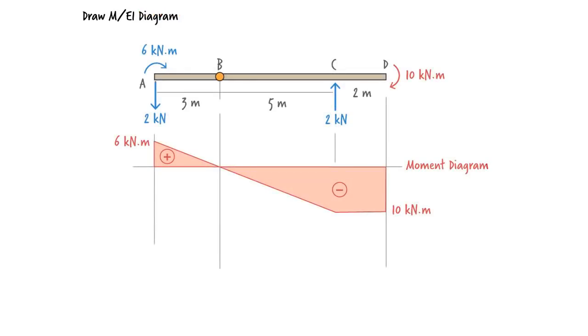We convert the moment diagram to a distributed load for the conjugate beam. This is done by dividing M by EI.